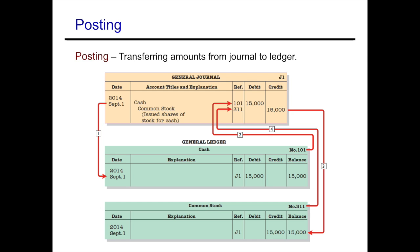When you have a transaction where only two accounts are affected, each one of those accounts has its own section in the ledger, or its own T-account. We're simply moving the information from the journal to the ledger — so if it was a debit to the account in the journal, it will be a debit to the account in the ledger as well.